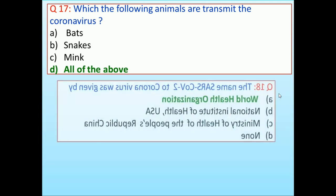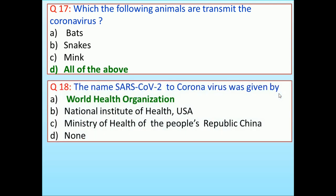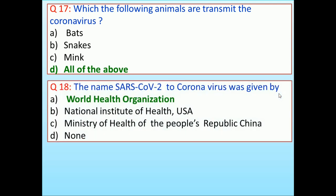The name SARS-CoV-2 for coronavirus was given by: World Health Organization, National Institute of Health USA, Ministry of Health of People's Republic of China, None. Answer is World Health Organization.